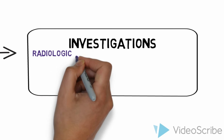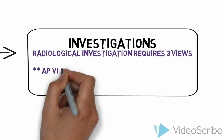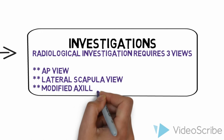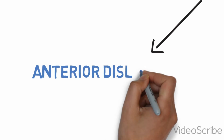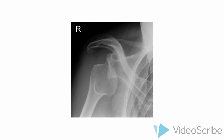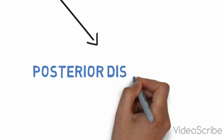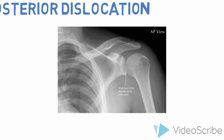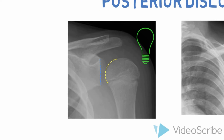To confirm your clinical diagnosis, an x-ray can be done. This radiological investigation requires three views: an AP view, a lateral scapula, and a modified axillary. For anterior dislocations on an AP view, the humeral head is displaced medially and overlies the glenoid. For posterior dislocations on the AP x-ray, it can be hard to identify at first; however, widening of the glenohumeral joint space can be noted. Also typically described on x-ray is a light bulb sign, which is forced internal rotation of the humeral head as it dislocates posteriorly.